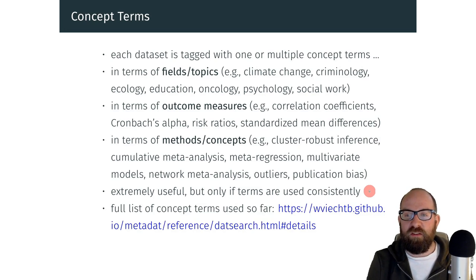So these concept terms are really useful to find particular datasets that may be of interest to you, but of course they need to be used across these different datasets in a consistent manner, and this is a bit tricky. So if you add or change a concept term, retrospectively you have to go back through all the existing datasets and make sure that they are tagged accordingly. You can find a full list of the concept terms used, at least so far, under this link.